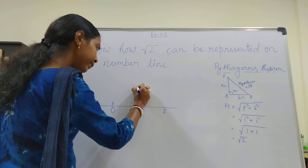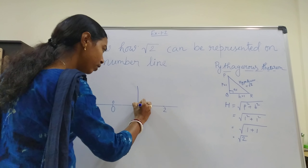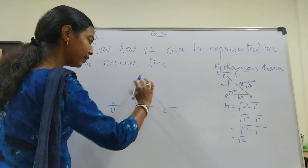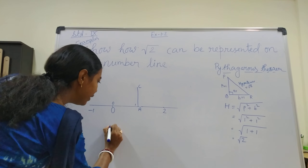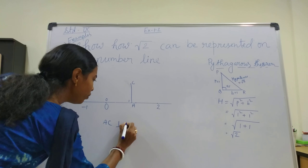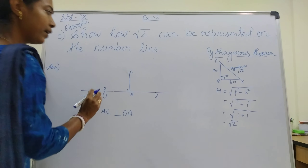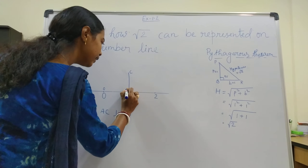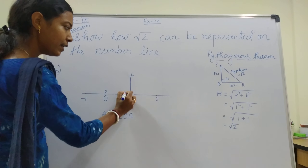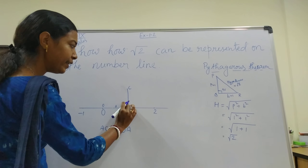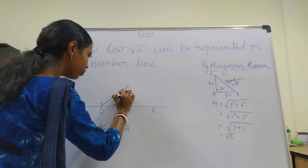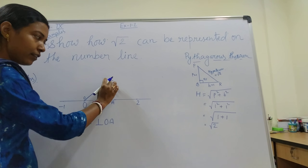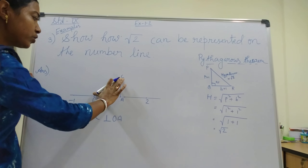Now draw a perpendicular line on the number line at point A. Name it AC, so AC is perpendicular to OA. This gives a 90-degree angle. If you join OC, then OAC is our right angle triangle, and OC will be the hypotenuse.